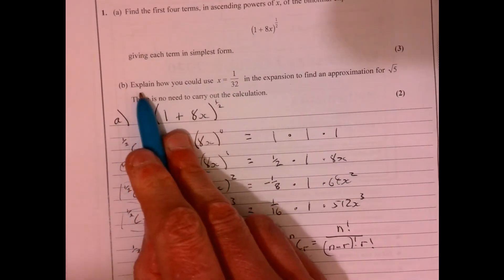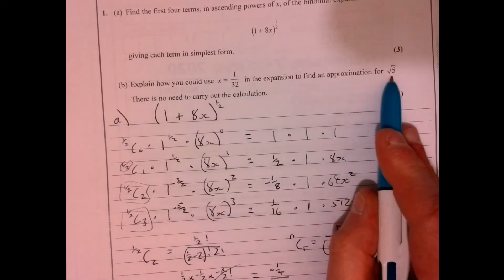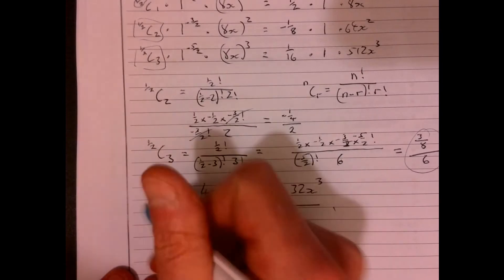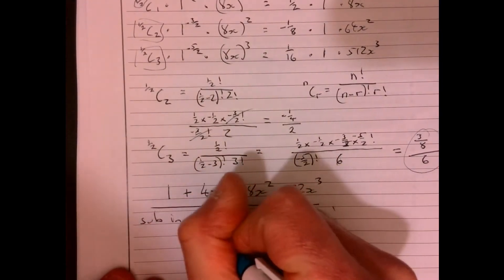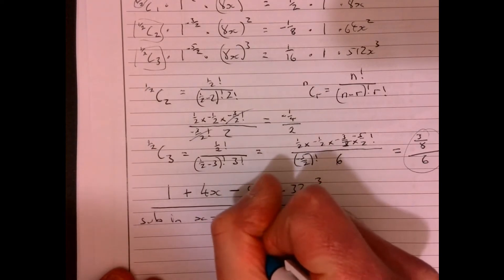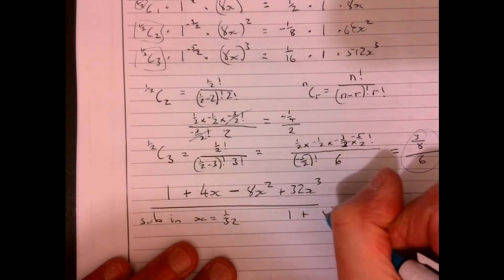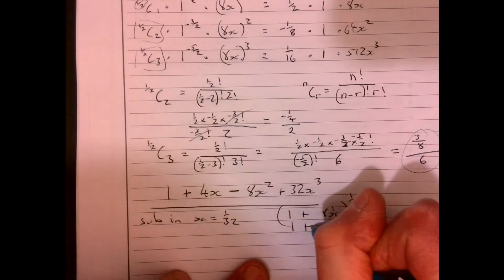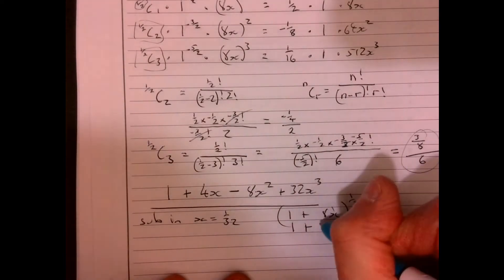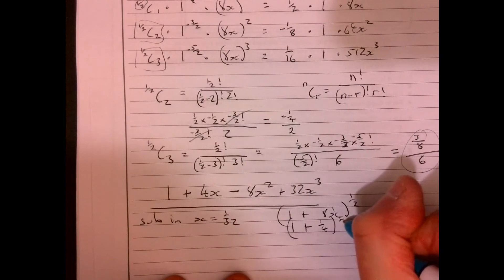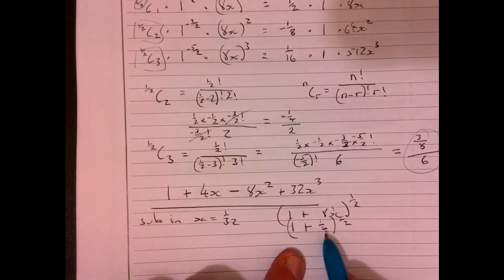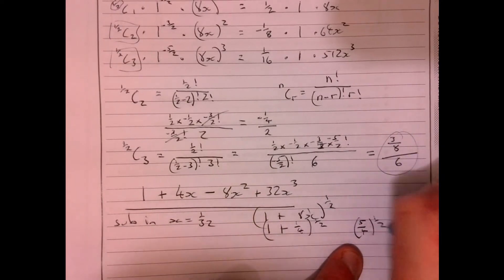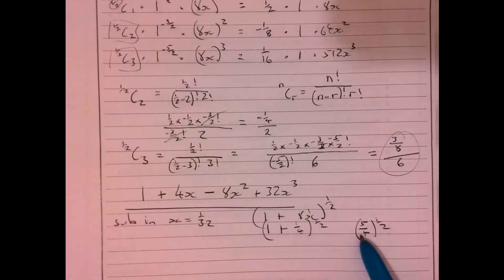Now, a lot of people get a little bit stumped by this. Explain how you could use x equals 1 over 32 to get an approximation for root 5. Well, let's just have a quick look and see how it works. So if you sub in, the best thing to do, if you're not sure, is just sub in x equals 1 over 32 into (1 + 8x) to the 1 half. Now, if you sub that in, you get 1 plus, so 8 over 32, that's a quarter. 1 plus a quarter, so that's 5 quarters. So if I subbed in 1 over 32, it might give me this bit here. Remember, I want to get root 5.